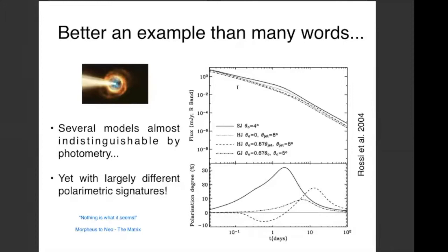This is one case where polarimetry can tell us a lot about the physics that is going on. Although it is always true that when we work in polarimetry, photons are never enough. You need large collecting areas and other specific tools to carry out a proper analysis, together with a lot of good statistics, because polarimetry can be very tricky.